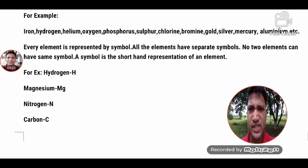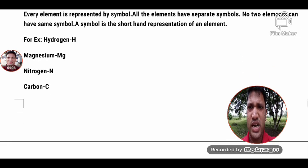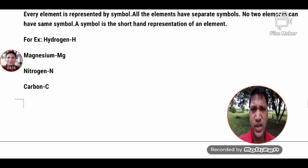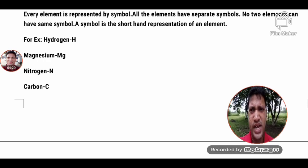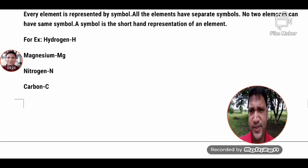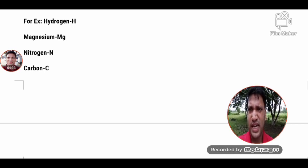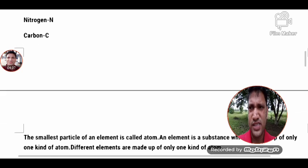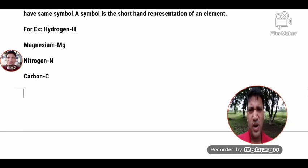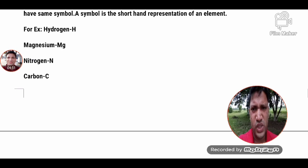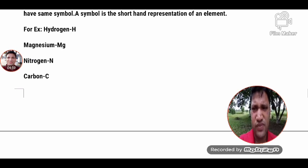A symbol is a shorthand representation of an element. We always represent elements by their symbol, which consists of English letters. For example, hydrogen is H, magnesium is Mg, nitrogen is N, carbon is C. The symbol is the first letter or the first two letters of the element's name — for example, H for hydrogen, N for nitrogen, C for carbon, Mg for magnesium (capital M, small g).